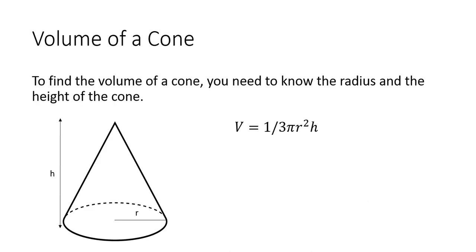For the volume of a cone, to find the volume, you need to know the radius and the height of the cone. And the formula for the volume of a cone is 1/3 π r² h. So actually, if you take the volume of a cylinder and divide it by 3, then you will have the volume of a cone.